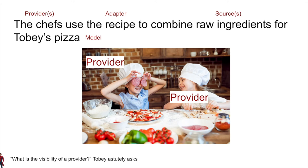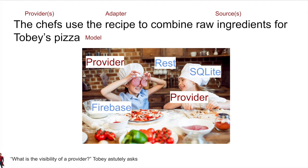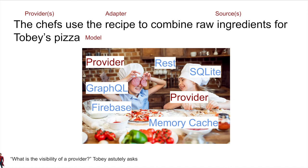Once we have our request for data, there are different providers that the repository will call. In the pizza analogy, maybe it's a frozen pizza, a pizza on a warmer, or a completely fresh pizza. The repository determines the freshest data to give by synthesizing from multiple providers — REST, SQLite, Firebase, memory cache, or GraphQL. The providers work behind the scenes, so you don't really care where your data is coming from; you just care that you get your data.